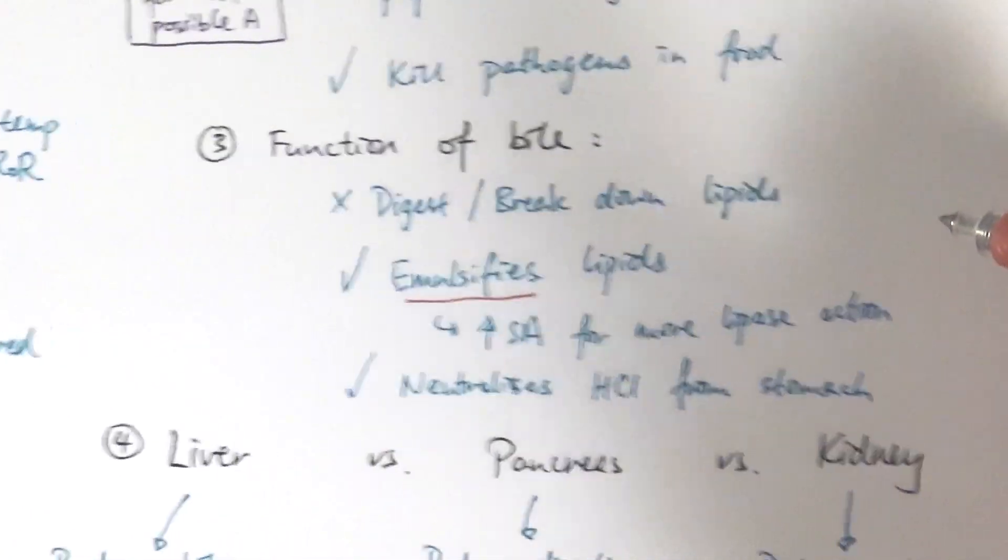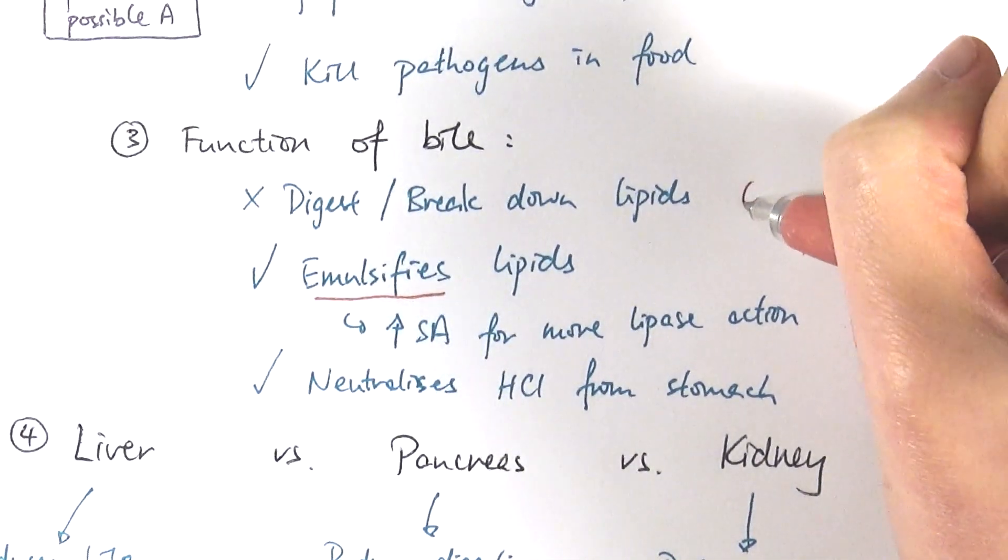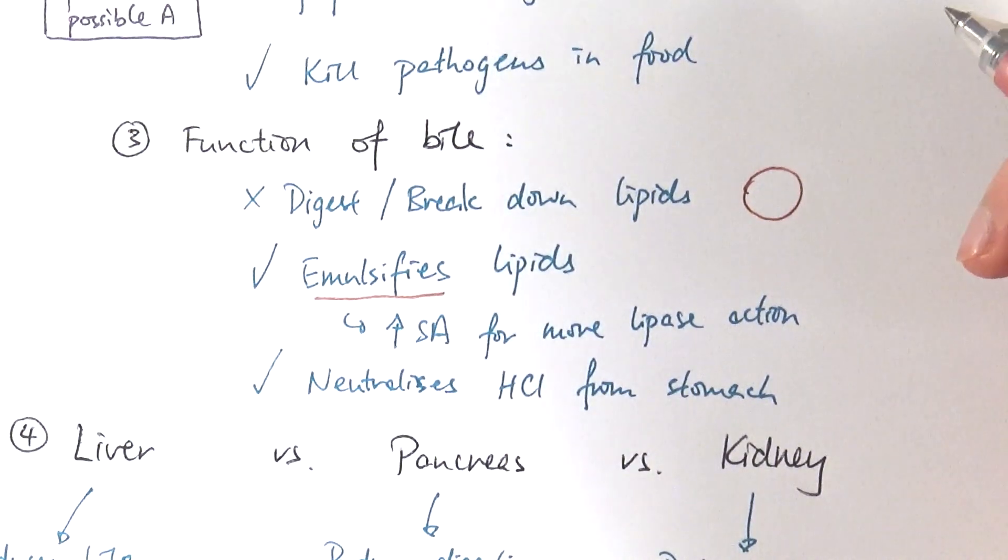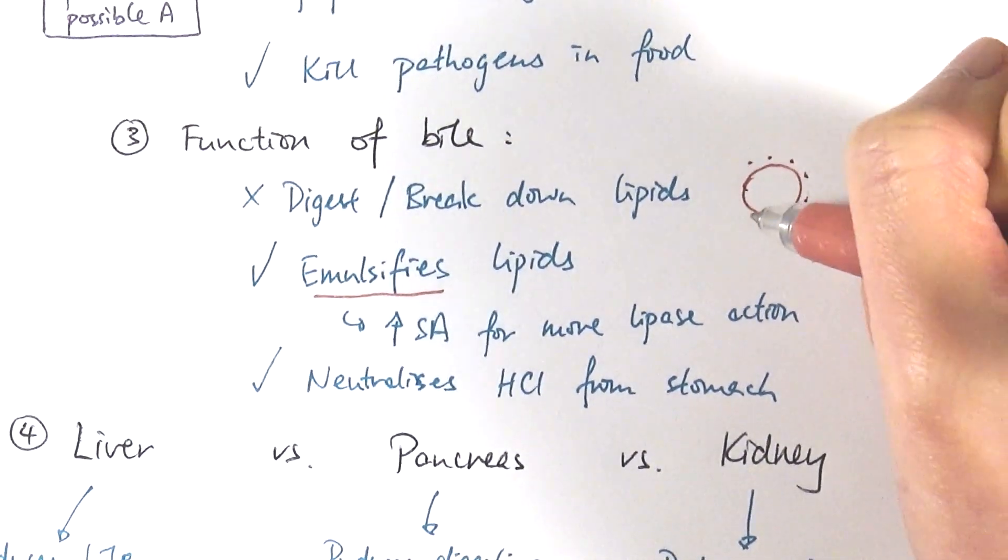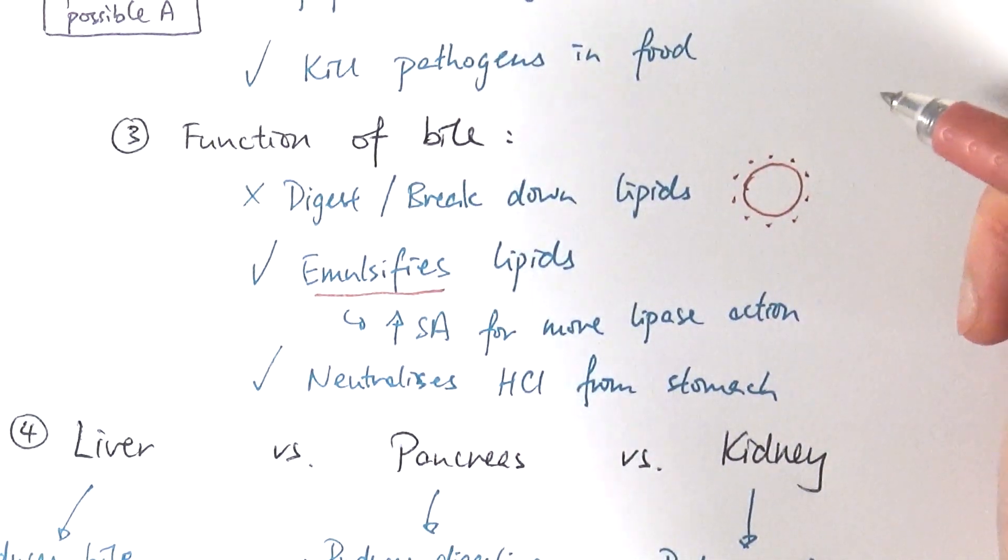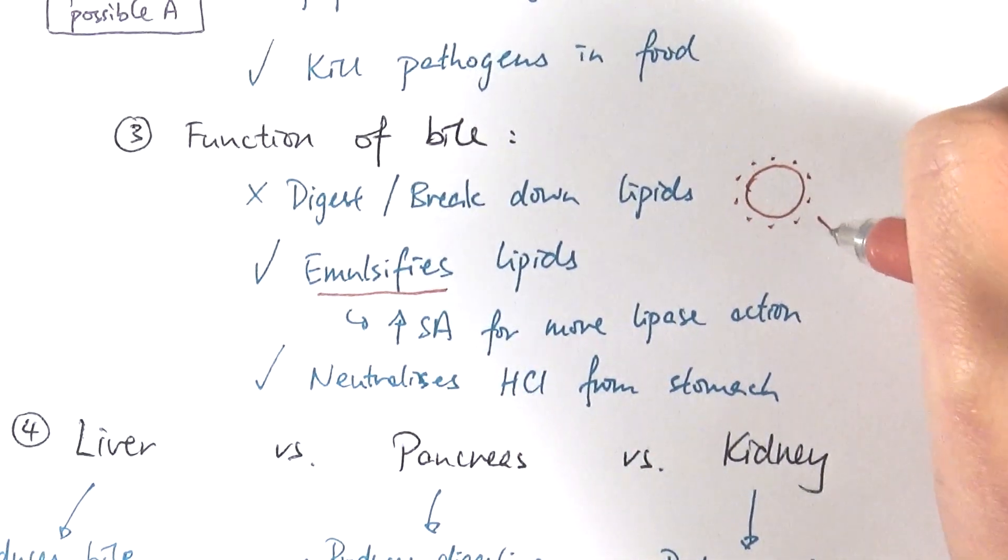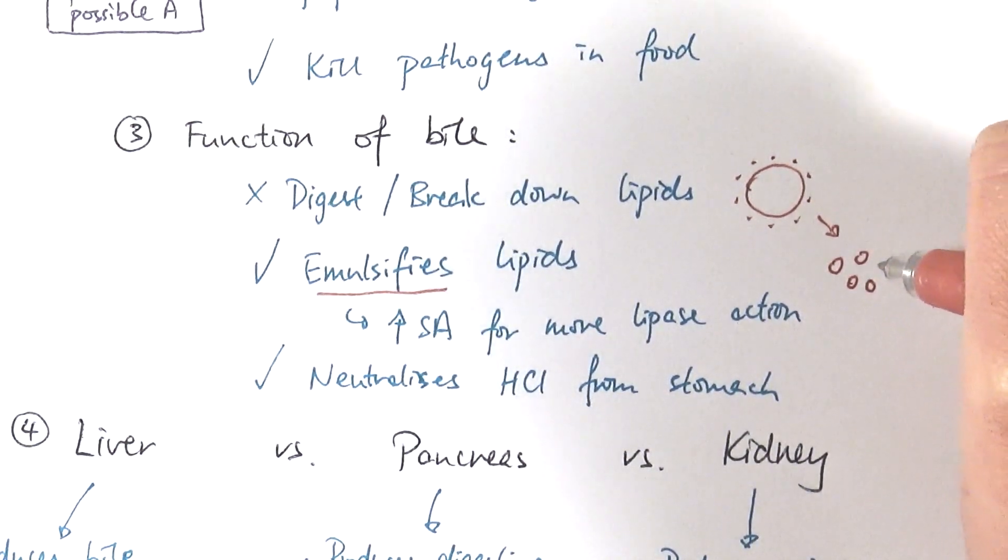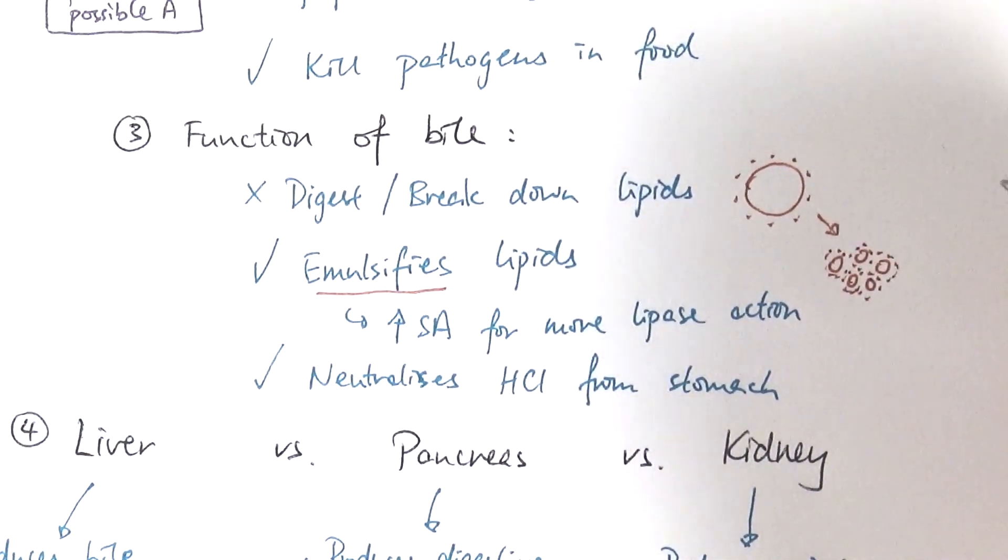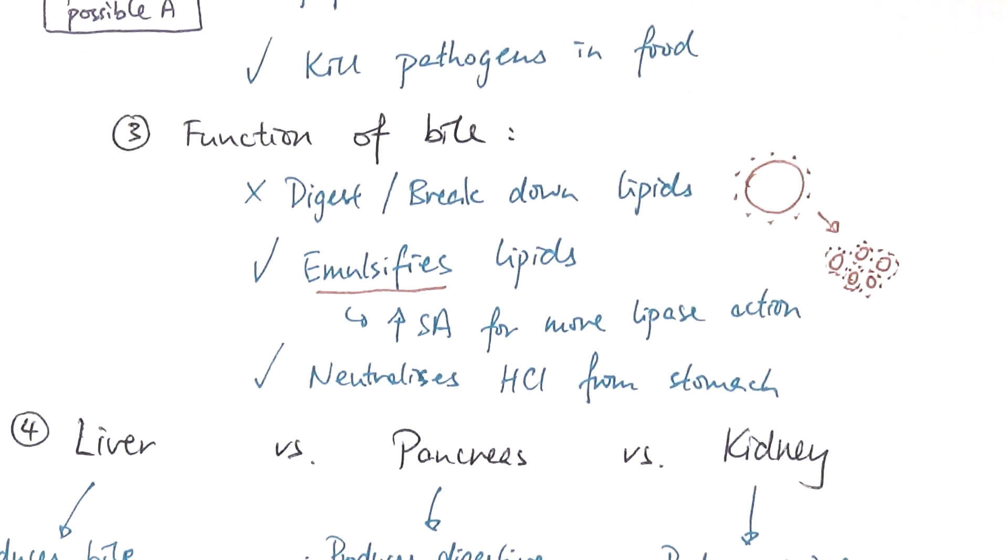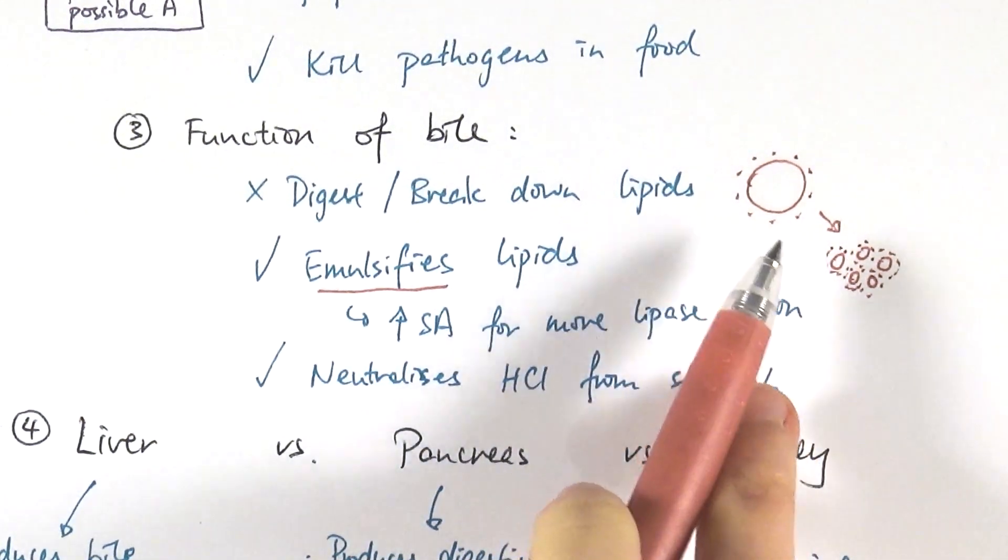So if we draw a very quick picture, imagine that I've got a large oil drop here and that means I've got this many lipase working on that. But if I'm able to physically break it down using bile into smaller oil droplets, so there is still sort of the same volume, but this time I can have a lot more lipase surrounding it and breaking it down and speeding up the whole process of digestion. So that's the importance of emulsification.